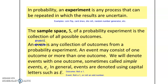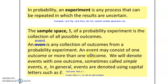An event is any collection of outcomes from a probability experiment. An outcome is rolling a one on a fair die. An event could be rolling a one, or another event could be rolling an odd number — that's going to be three different possible outcomes in that event. Since we've collected all of the outcomes together in odd numbers, we can call that an event.